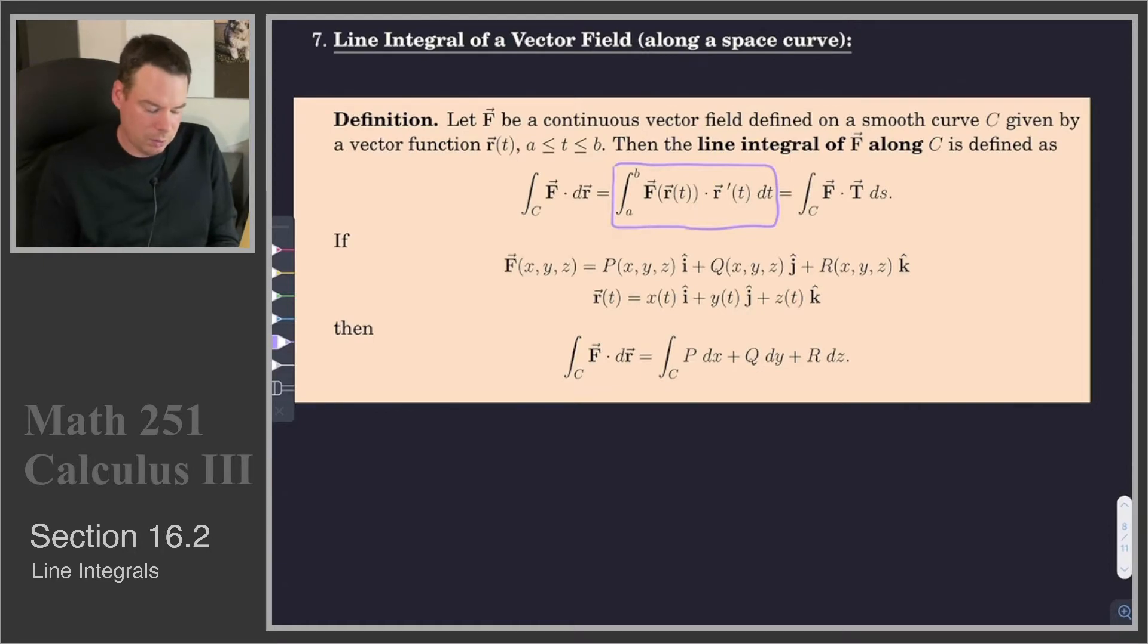This was the integral we came up with when we were looking at finding the work done by the force field on a particle moving along an arc of a cycloid. It was the value of the vector field at the point on the curve dotted with the direction vector, or the tangent vector to the curve at that point, and then we integrate along all of those.